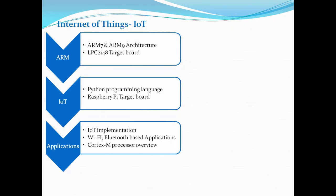The second level is Internet of Things. Here we provide training on 32-bit devices, starting with ARM processor architecture. We cover the most popular ARM versions — ARM7 and ARM9 — including their complete architecture: bus architecture, registers, and operating modes.